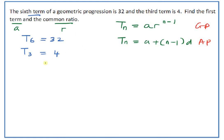Using the formula, T6 is 32, so we have A·r^5 equals 32. Just substitute n equals 6 into the formula, and you get the first equation. The third term is 4, so you have A·r^2 equals 4.